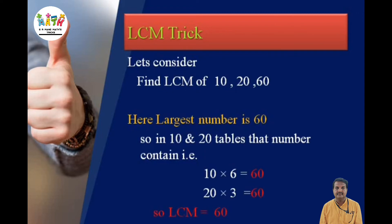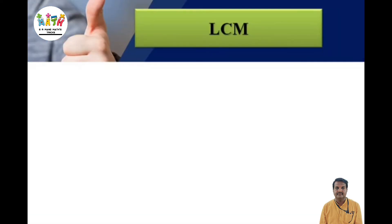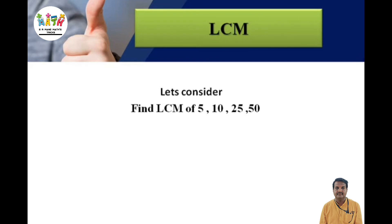With a few seconds of practice using this trick, it becomes easy. Let's take a second example: find the LCM of 5, 10, 25, and 50. Here the largest number is 50. We need to check whether the remaining numbers — 5, 10, and 25 — are contained in the table of 50 or not.